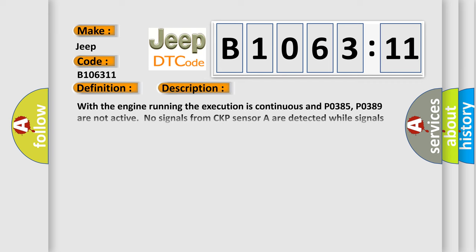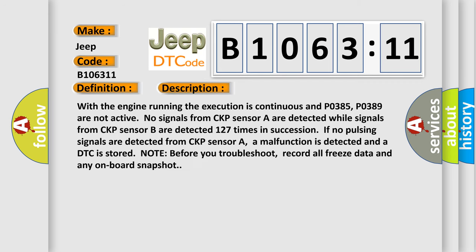And now this is a short description of this DTC code. With the engine running the execution is continuous and P0385, P0389 are not active. No signals from CKP sensor A are detected while signals from CKP sensor B are detected 127 times in succession. If no pulsing signals are detected from CKP sensor A, a malfunction is detected and a DTC is stored.